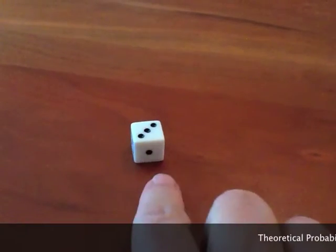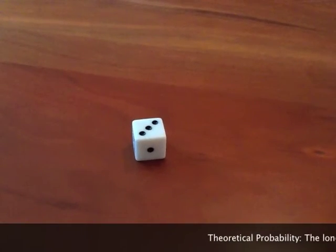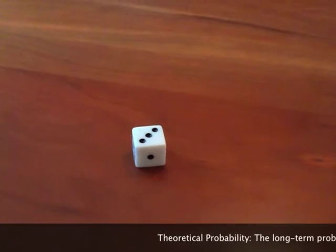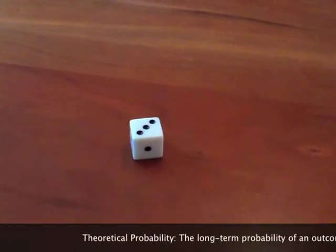The probability of rolling any of these numbers on this dice is 1 in 6. However, that's a theoretical probability. Theoretically, I have a 1 in 6 chance.